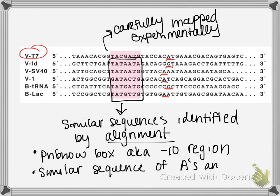You can see there are a lot of T's in the first position in most of them, A's in every single second position, a lot of T's in the third, and so on. This sequence is now called the Pribnow box. It is also known as the negative 10 region, because it is about 10 base pairs upstream of the transcription start site — minus 10.